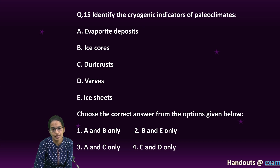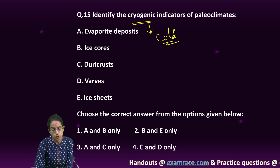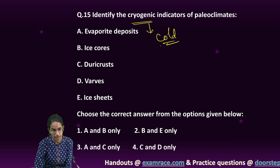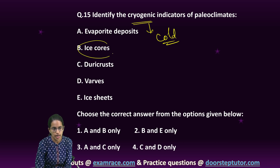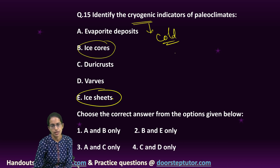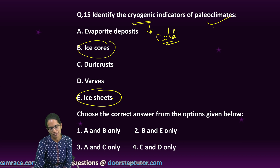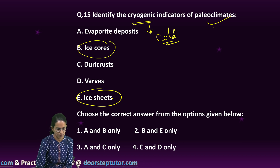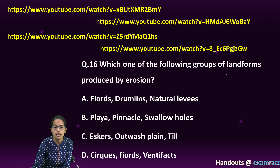Cryogenic refers to anything that deals with cold temperatures. From the given choices, ice cores and ice sheets are the indicators of paleoclimatic conditions. It's a very direct question — if you know the meaning of cryogenic, you can answer it.